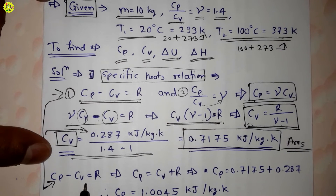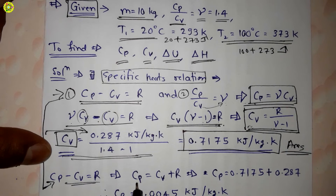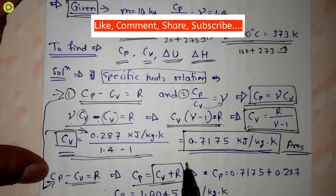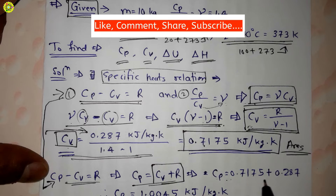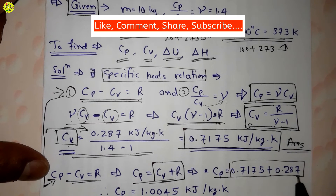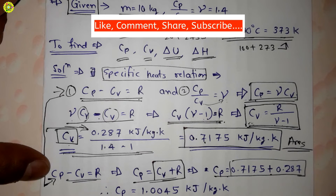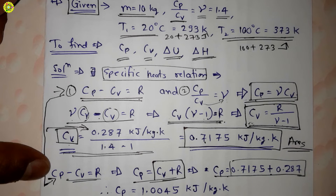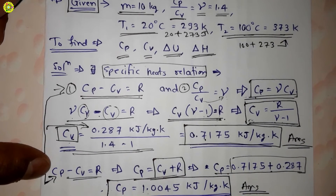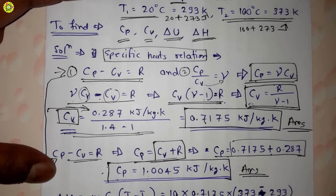Now using the relation cp minus cv equals R, we get cp equals cv plus R. Putting in the values: cp = 0.7175 plus 0.287, which gives cp equal to 1.0045 kJ/kg·K. This is our answer for the specific heat at constant pressure.